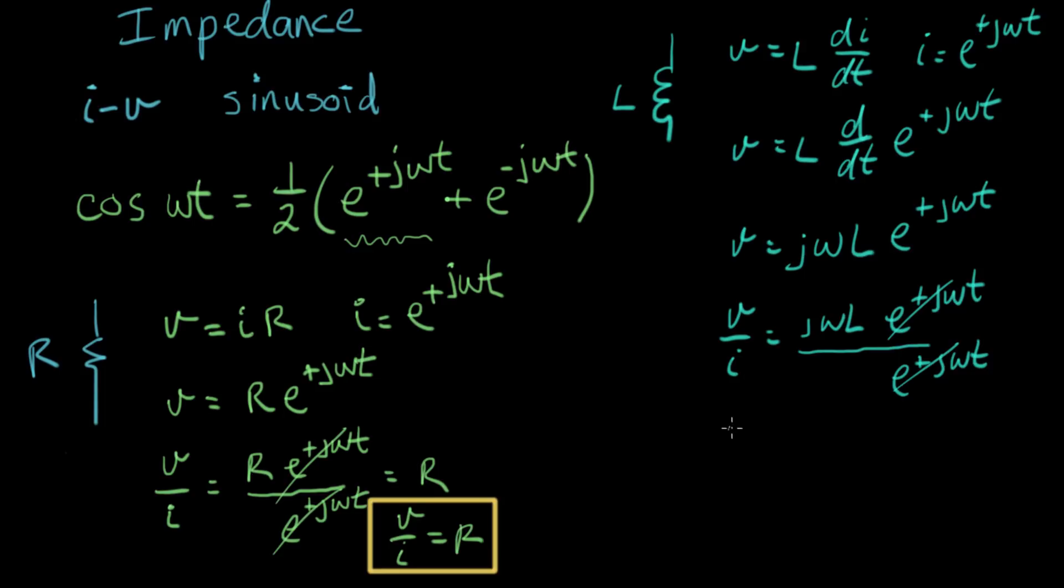So those cancel. And we get V over I equals j omega L. So now we have an equation for V over I for an inductor, and this is interesting. This time we have the inductance value, which we expected. And there's also this omega, j omega term that comes in. So this tells us that the ratio of V to I for an inductor is dependent on frequency.